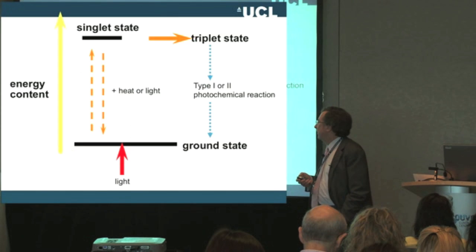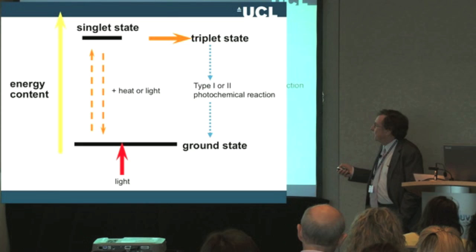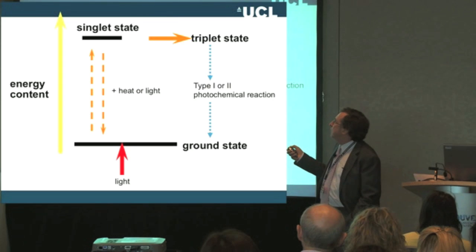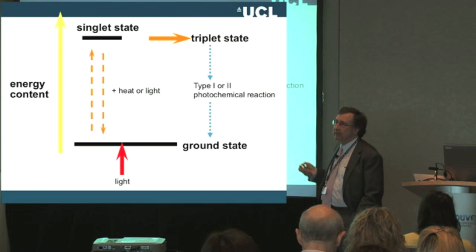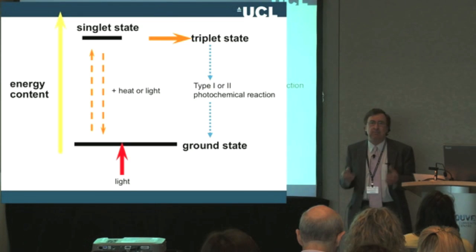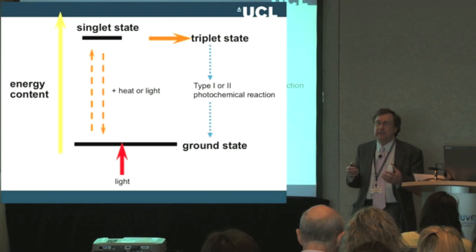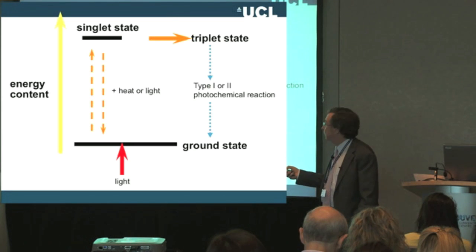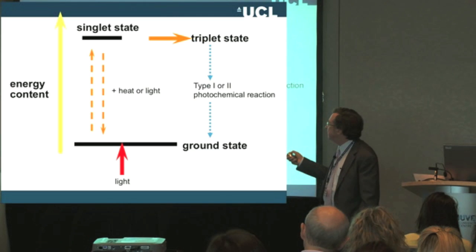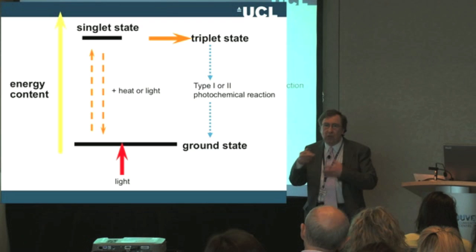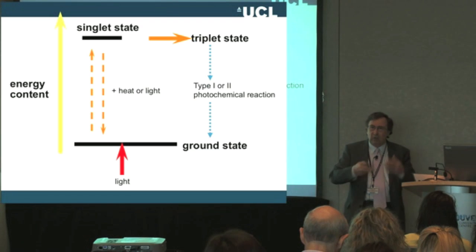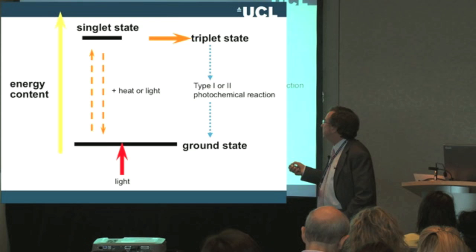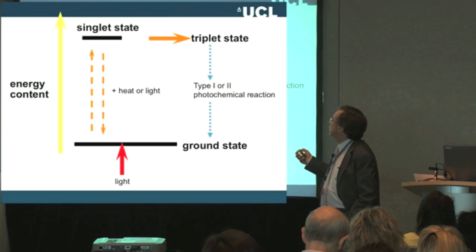Here is what happens: methylene blue in the ground state, the normal state, absorbs one photon of light and is promoted to an excited singlet state. Many molecules do that — many molecules will absorb a photon of light, but most will then fall back to the ground state almost straight away and emit the excess energy either as heat or as light. There's not a lot of either from one photon, so it would not normally be observable.